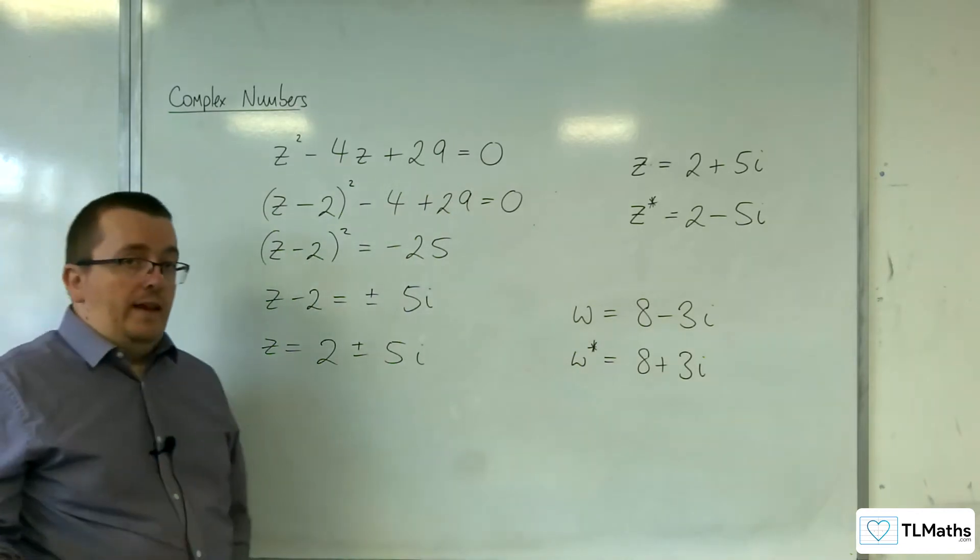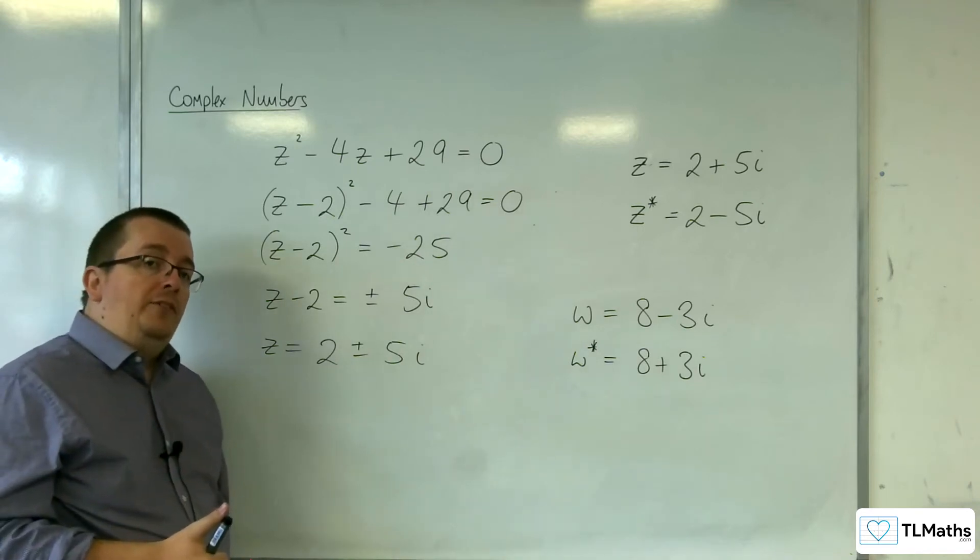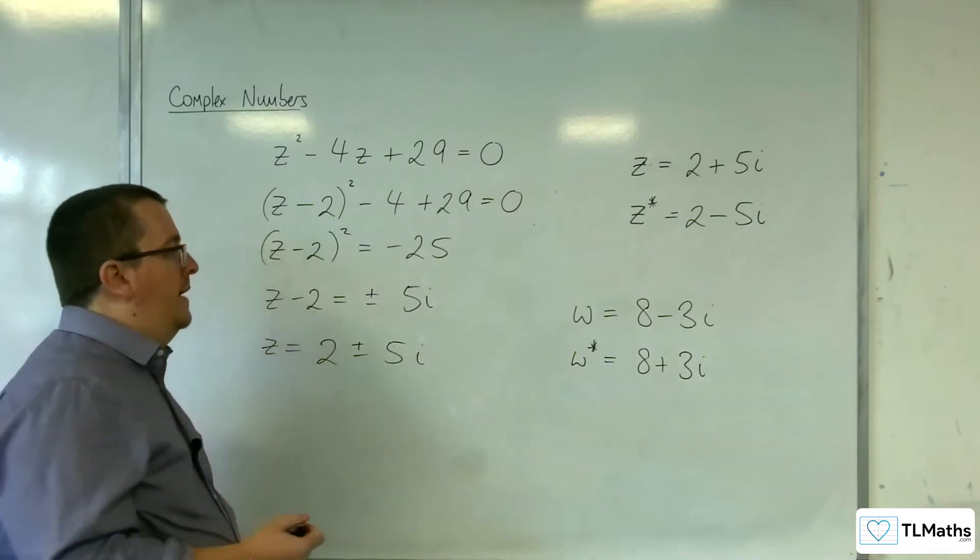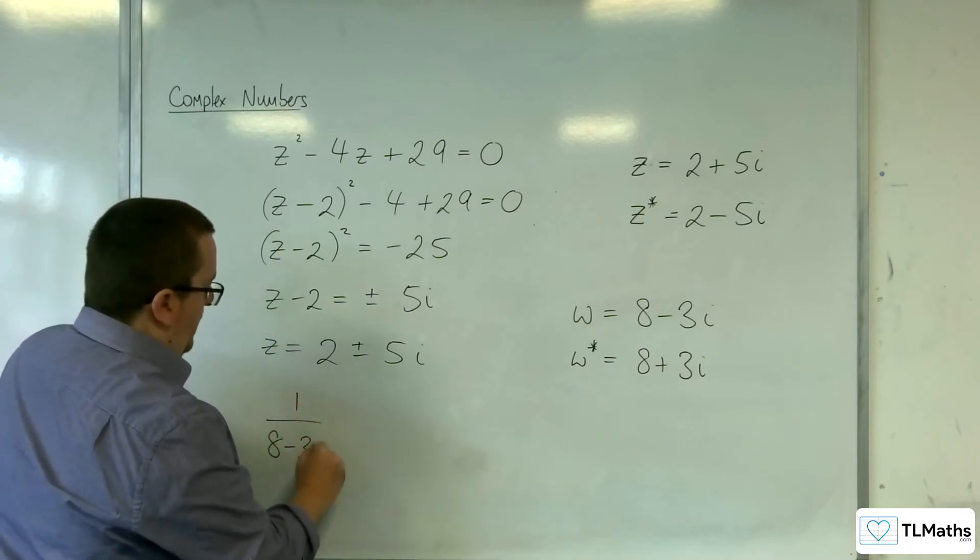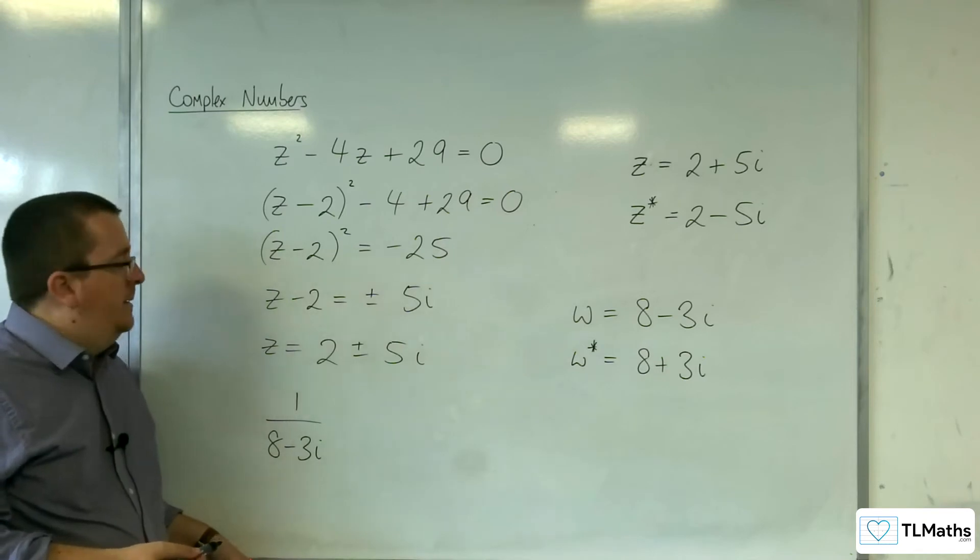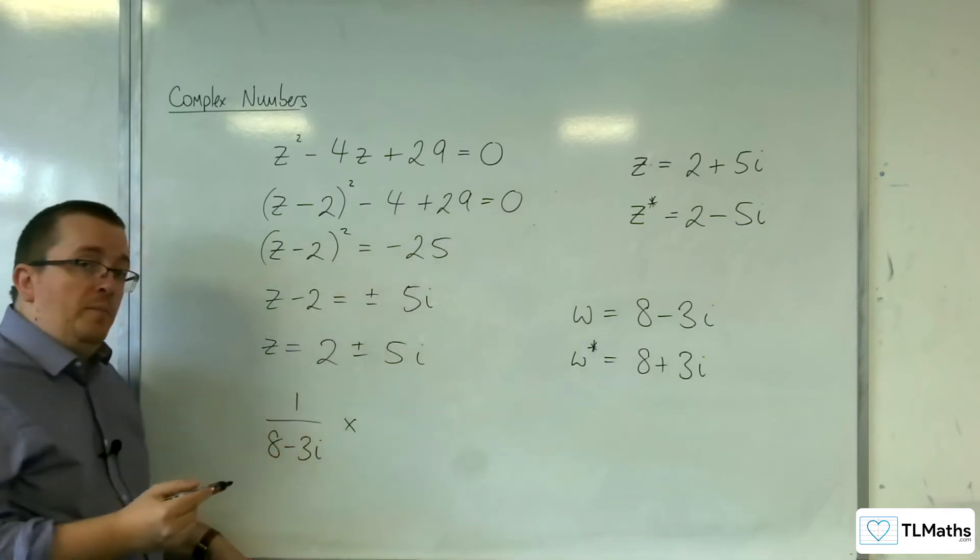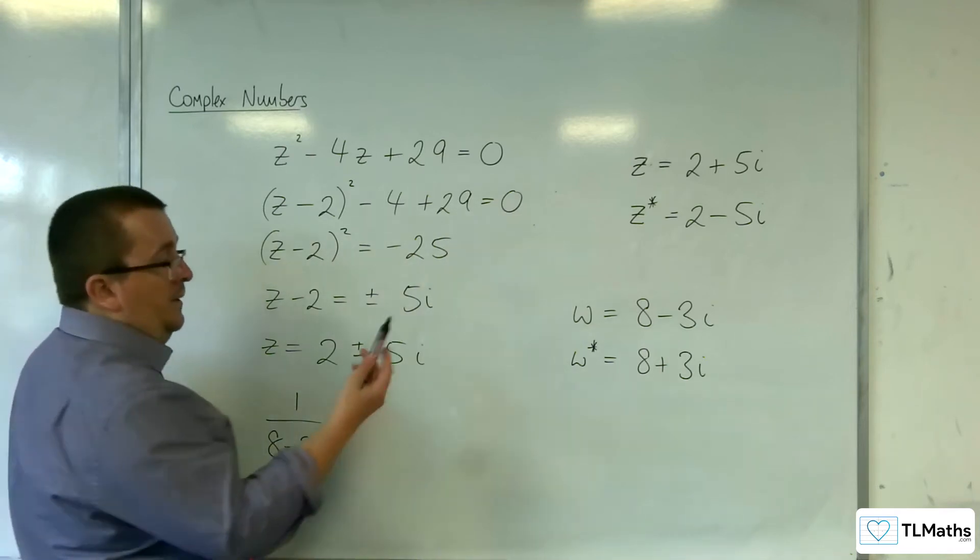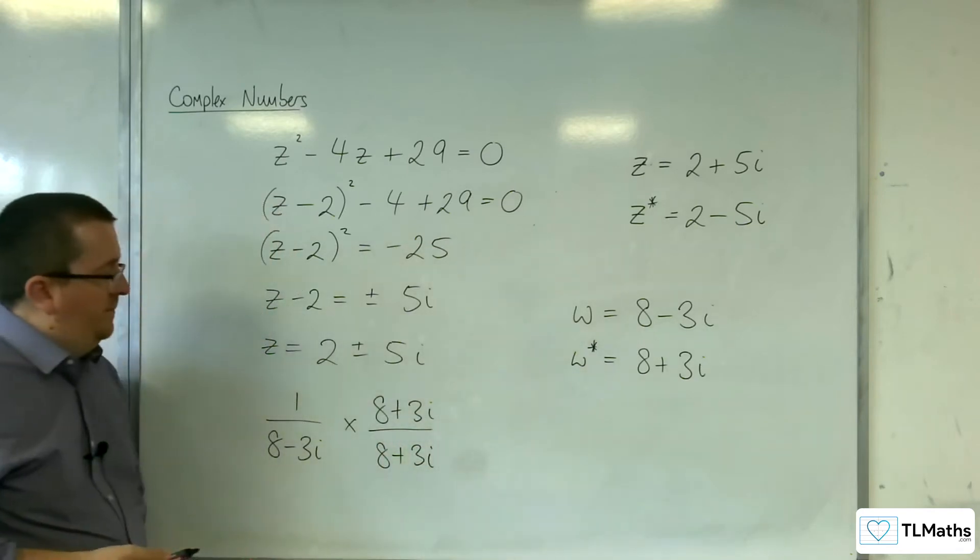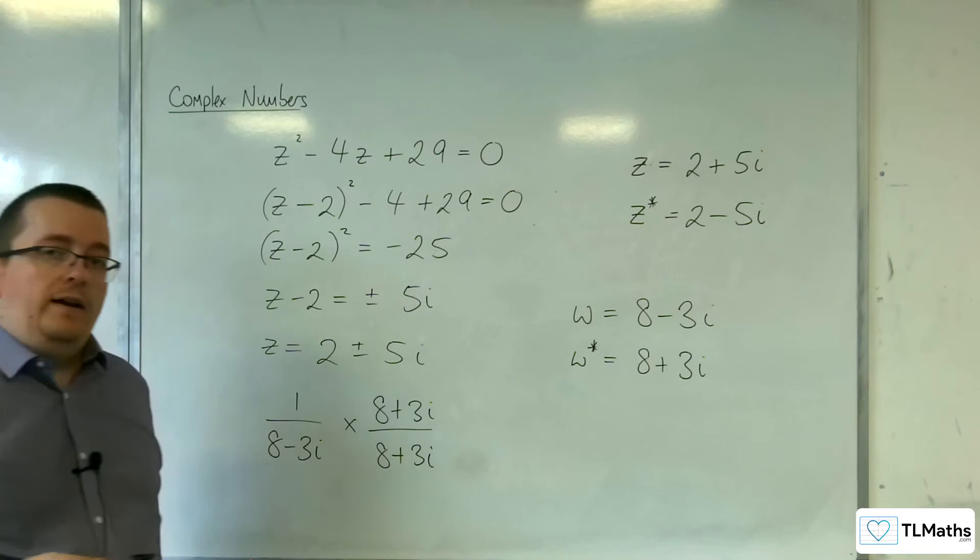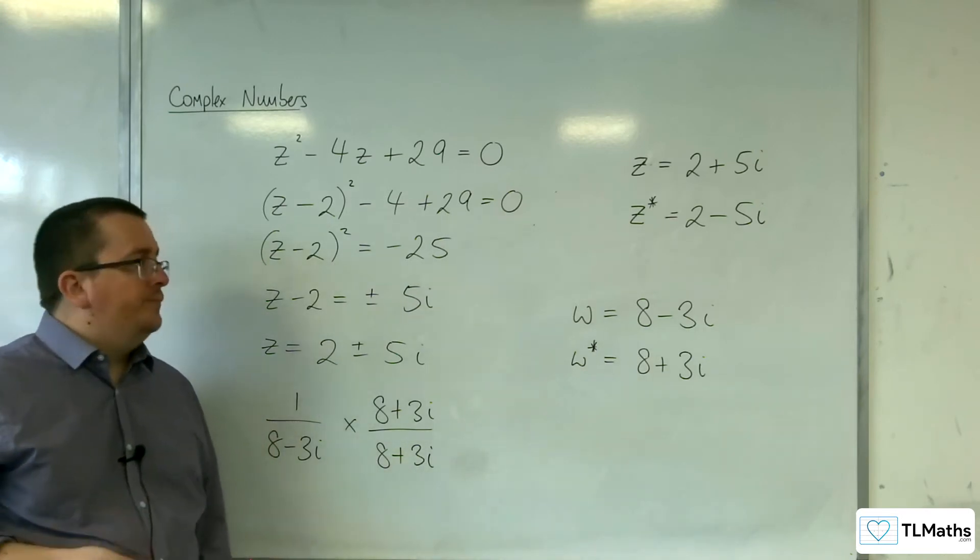Now, we've seen this working when we were dividing by complex numbers. So if you had 1/(8 - 3i) and you wanted to simplify that and have a real denominator, then you can multiply top and bottom by the complex conjugate, 8 + 3i. So the complex conjugate of the denominator. And doing that will remove the imaginary part from the denominator.